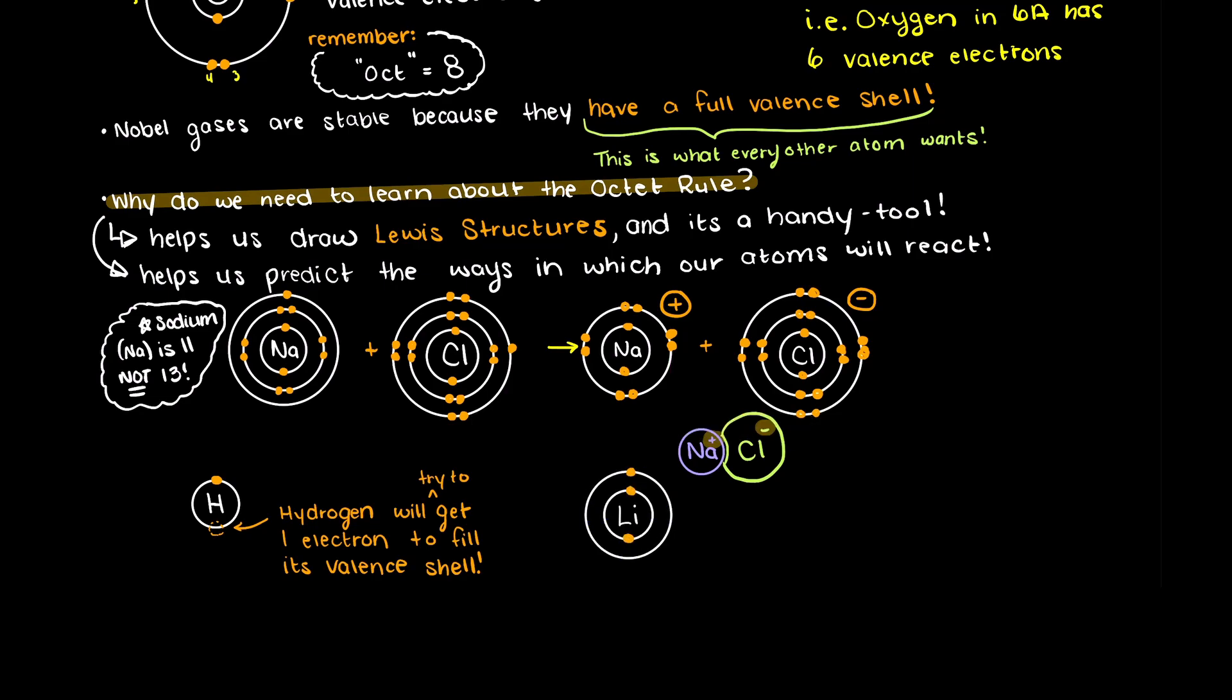However, what about atoms like lithium? Well, similar to hydrogen, lithium will also lose an electron and it will not follow the octet rule. So just be cautious and think about what is the simplest and obvious way to stabilize an atom.